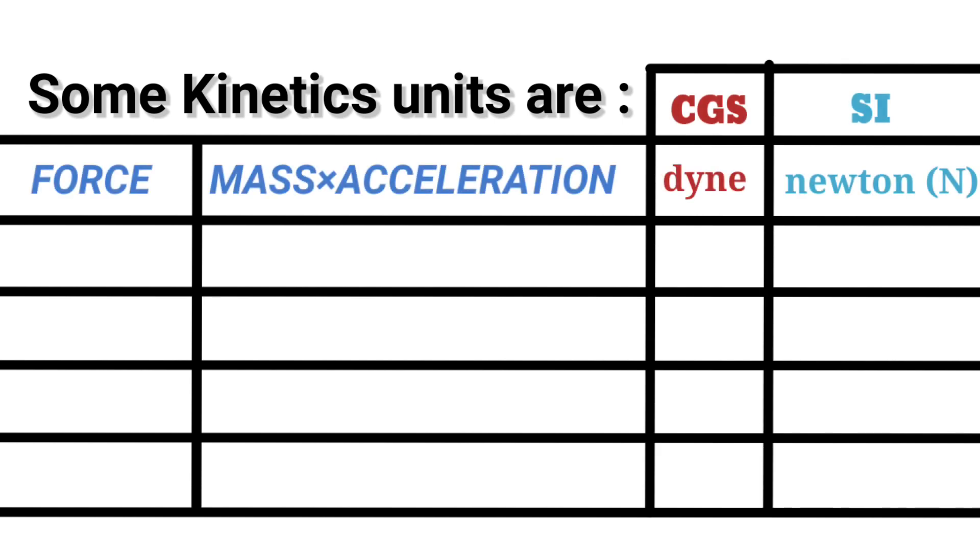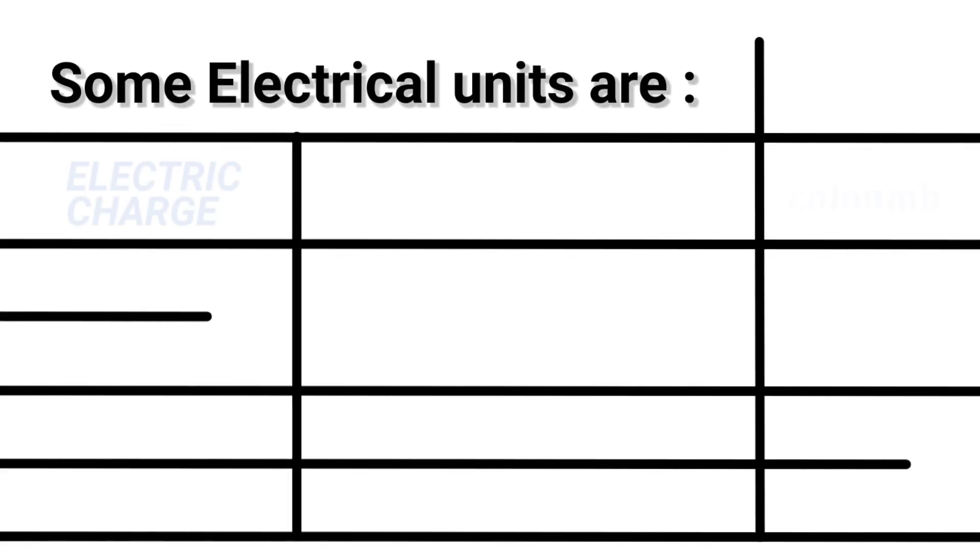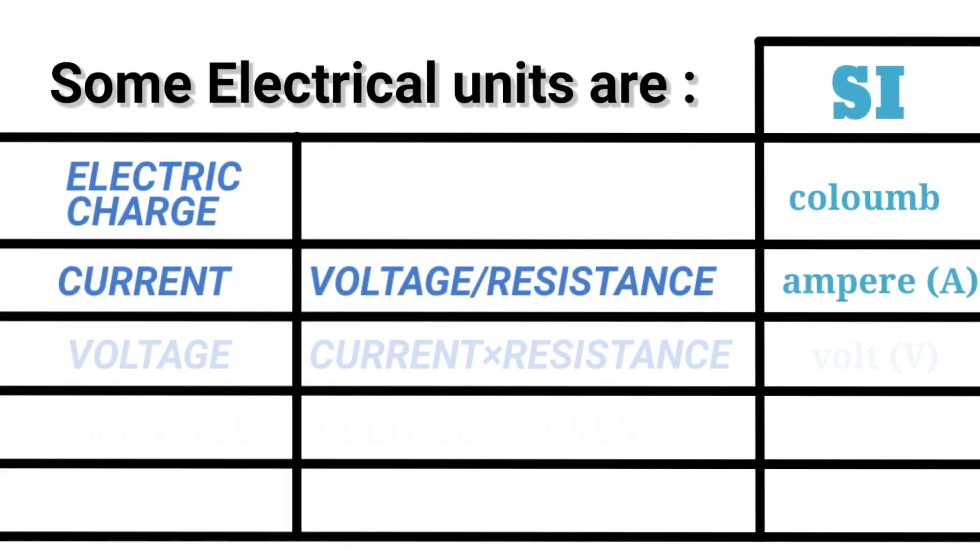Some kinetics units are force equals to mass into acceleration: dyne, Newton. Work equals to force into displacement: erg, joule. And energy: CGS erg, SI joule. Power: watt. Pressure: SI pascal. Some electrical units are electric charge coulomb, current equals to ampere.